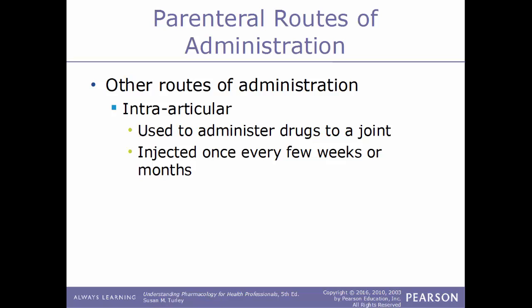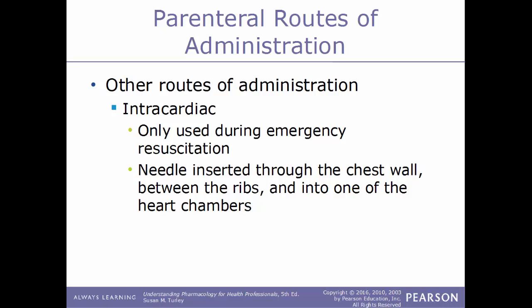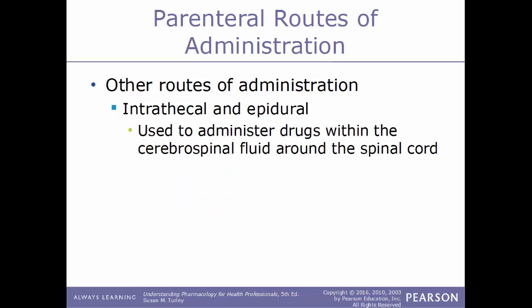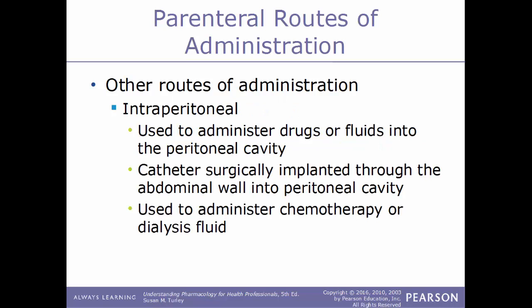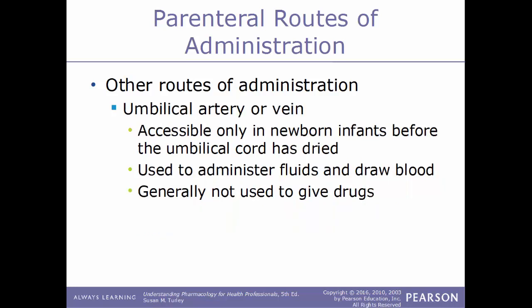The intraarticular route administers drugs into a joint (articulation) and is injected once every few weeks or months. Intracardiac injections are used only in emergency resuscitations, inserting a needle through the chest wall between the ribs into a heart chamber. Intrathecal and epidural routes administer drugs within the cerebrospinal fluid surrounding the spinal cord. Intraperitoneal delivers drugs or fluids into the peritoneal cavity via a surgically implanted catheter through the abdominal wall, used for chemotherapy or dialysis. The umbilical artery or vein is accessible only in newborns before the cord dries, used mainly to administer fluids and draw blood.